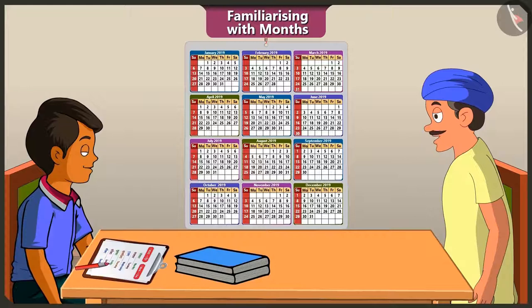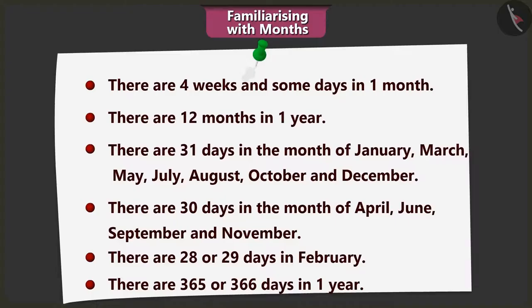Chotu, tell me what all you remember about the months of a year. There are 4 weeks and a few days in a month. There are 12 months in a year. January, March, May, July, August, October, and December months have 31 days. April, June, September, and November months have 30 days.